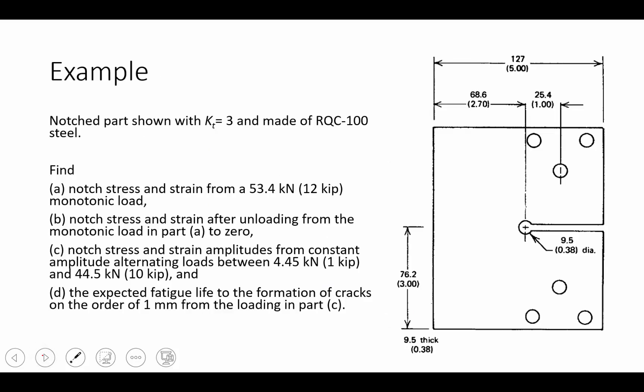Let's look at an example, or let's summarize the example that's available in the book. The example uses a similar geometry to our previous video example, this compact tension circular notch specimen. In this notch specimen, our static stress concentration factor K_T is equal to 3, and this is made of RQC-100 steel.